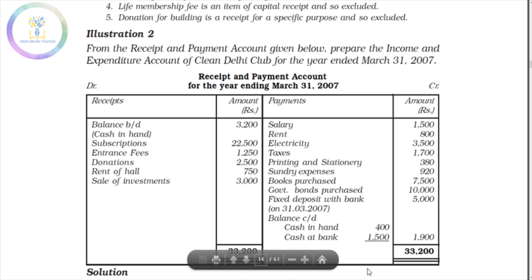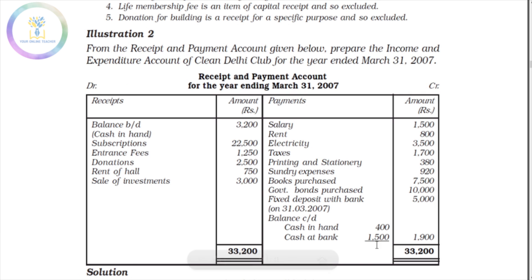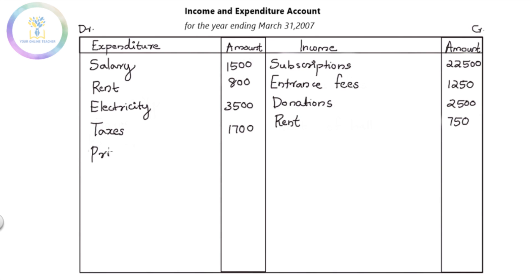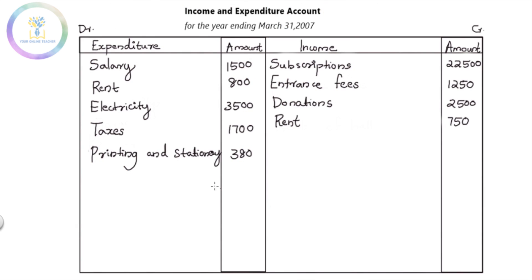Next, rent is $570. We take the tax into account, so revenue is $570. Printing and stationery is $380. The stationery is $380. We put the tax in, bringing the total to $380. That is the amount of expenditure.